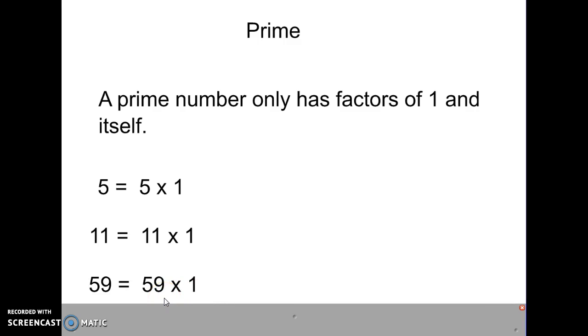And 59 would be another example of a prime number, because the only factors it has is 1 and itself. Now, you think of a prime number. So, what's another example of a prime number? A number that would have only factors of 1 and itself.